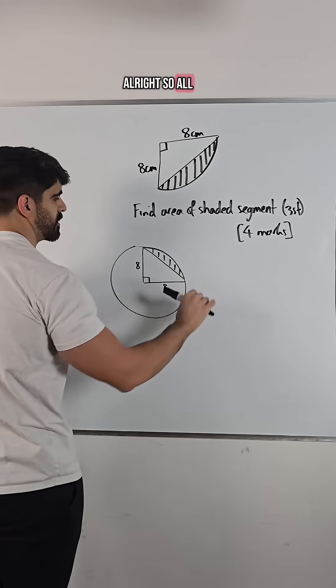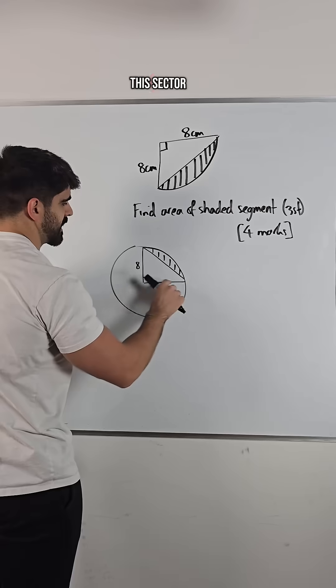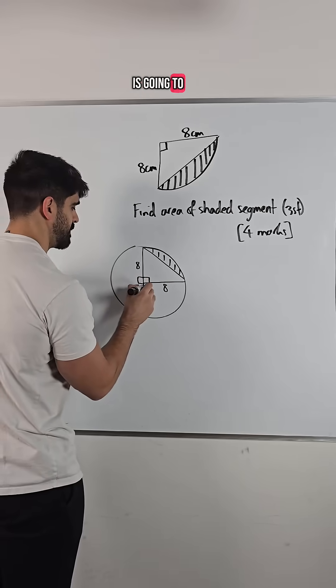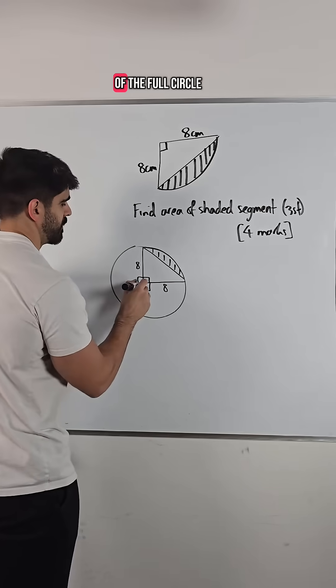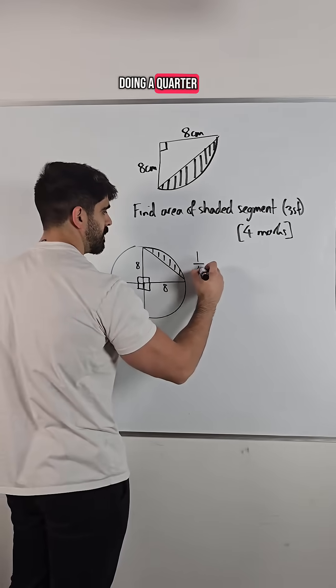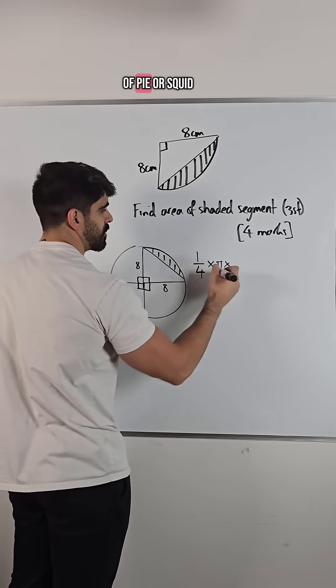So all we're doing is the area of this sector, which is a quarter, because 90 is going to be a quarter of the full circle. So we're doing a quarter of pi r squared.